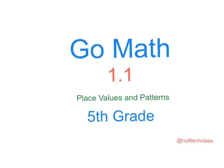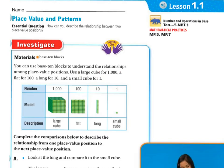This lesson is 1.1. Good morning. We are going to be looking at place values and patterns. Our essential question today: how can you describe the relationship between two place value positions? Let's investigate.